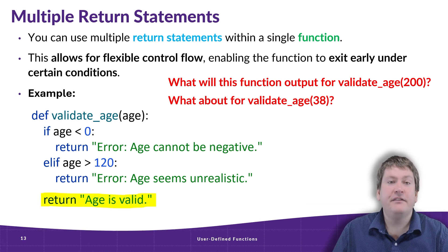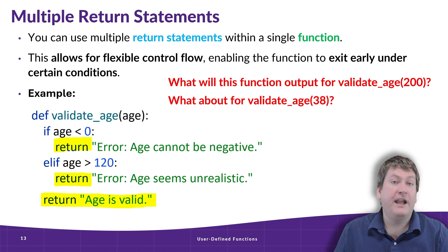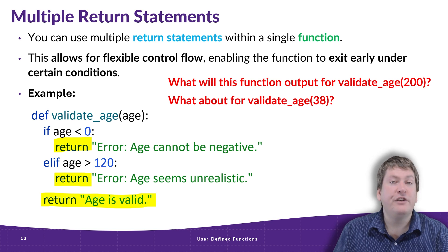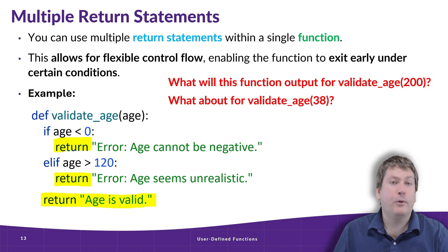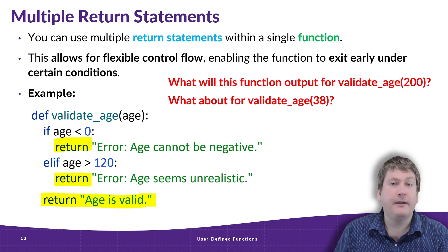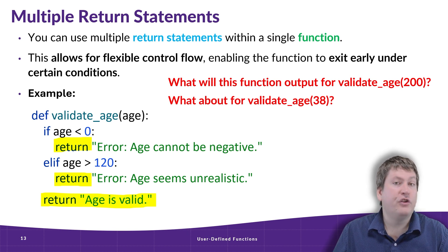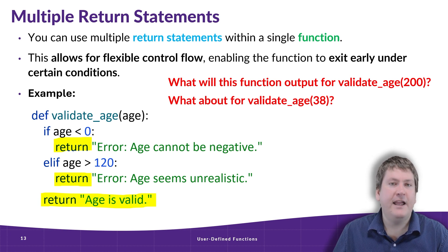And we're back. The key here is that 'return age is valid' is outside of the if statements. However, the other two return lines cause the function to exit immediately. So if age is less than zero, we return 'error age can't be negative' right away, and we never reach the line that says 'return age is valid.' Same thing with age being greater than 120 — we return 'error age seems unrealistic' and never resume execution after the if statement. So for validate_age with an argument of 200, the output would be 'error age seems unrealistic.' For validate_age 38, the output would just be 'age is valid' since neither of the if statements were true.